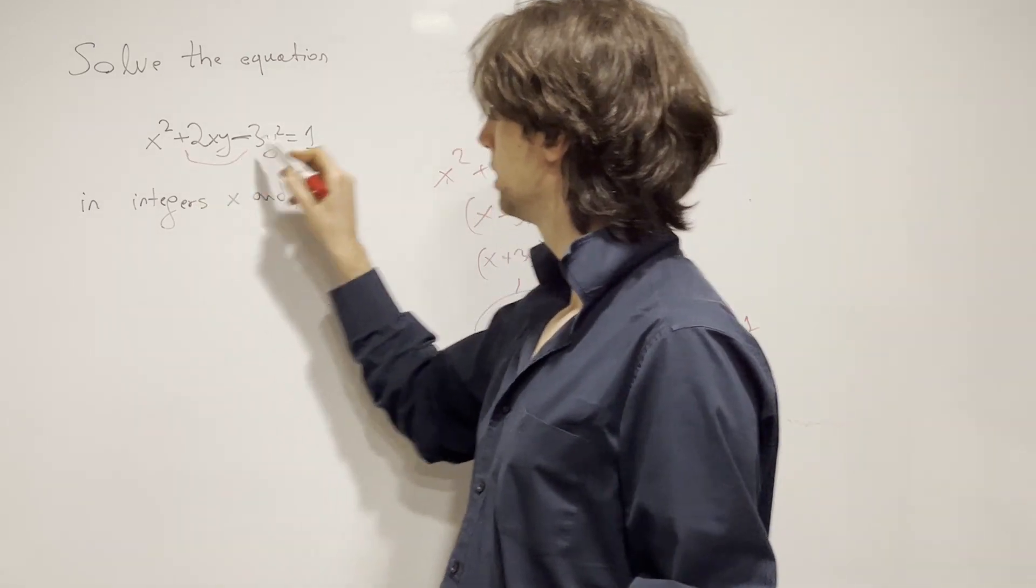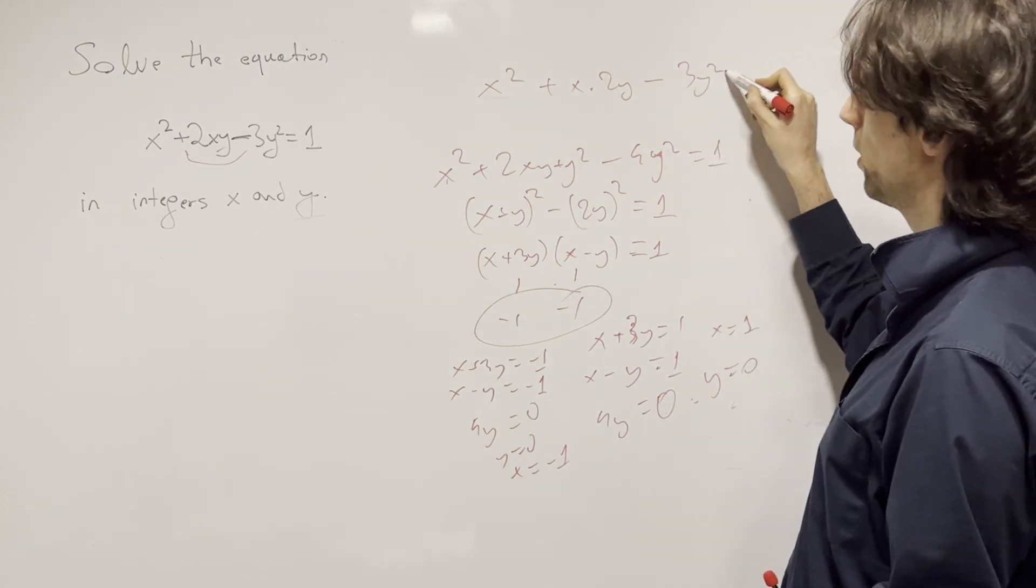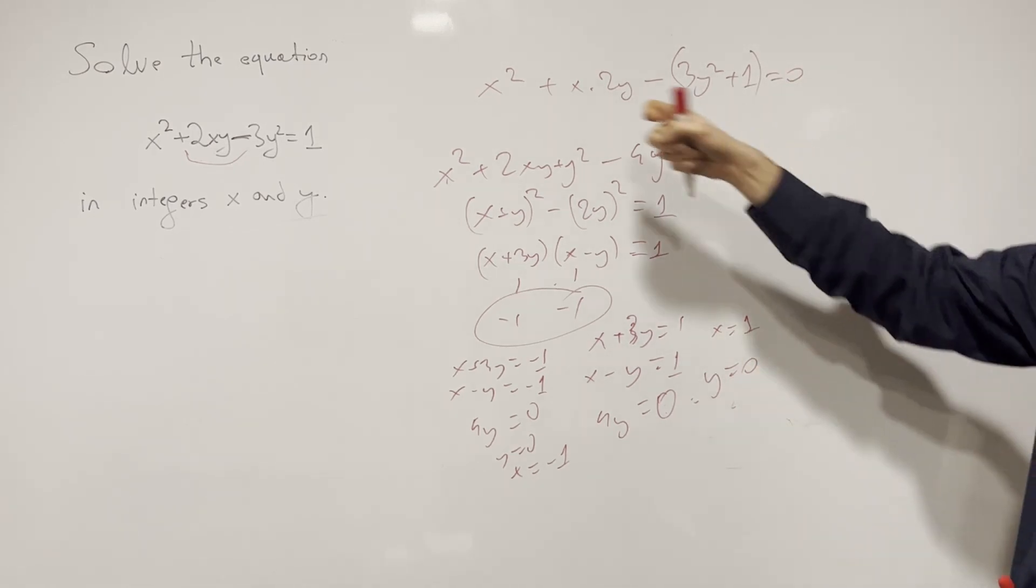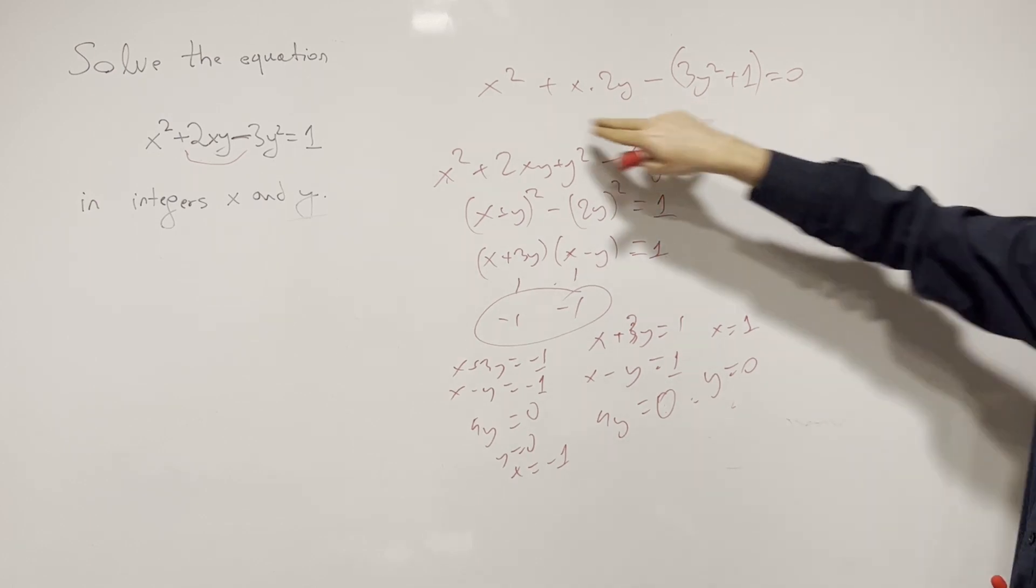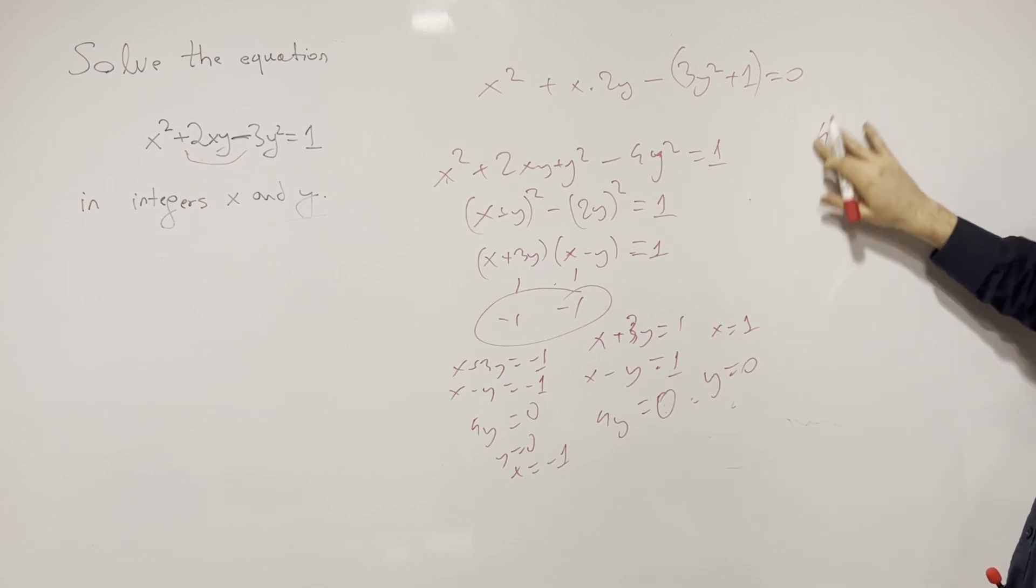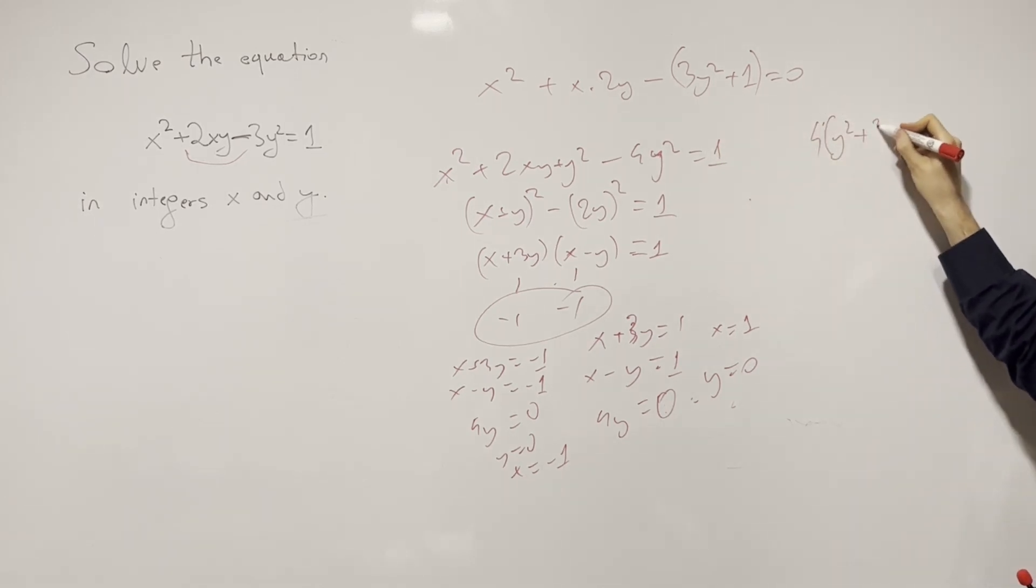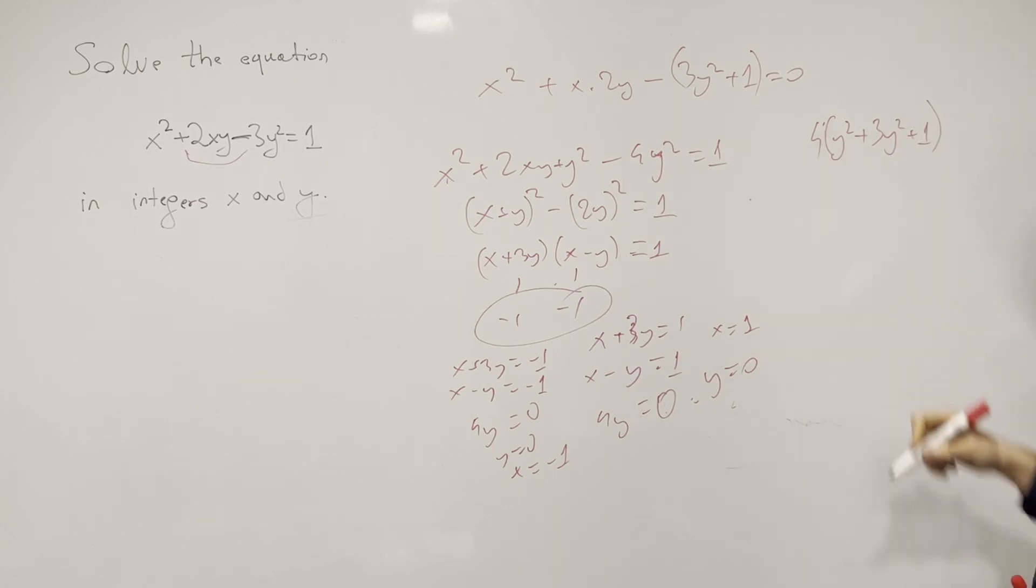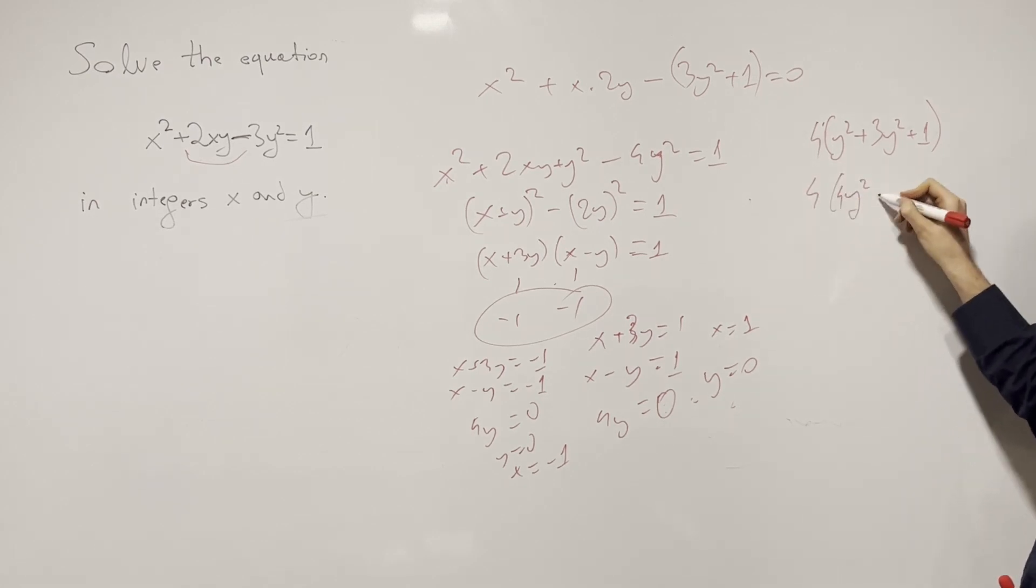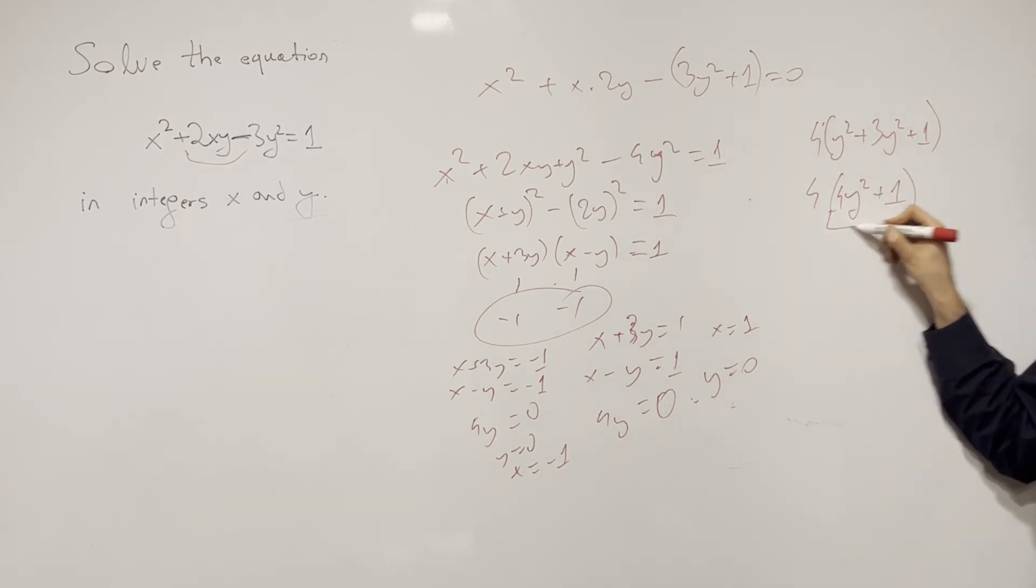And now the discriminant must be a perfect square. What is the discriminant? Well, we have x² + x times 2y - 3y² - 1 = 0. So let me write it like that. It's easier for me. Now, this squared minus 4 times this times this is equal to 4y². Let me do 4y². I'll get the 4 out immediately. Minus this, so it's plus 3y² plus 1.